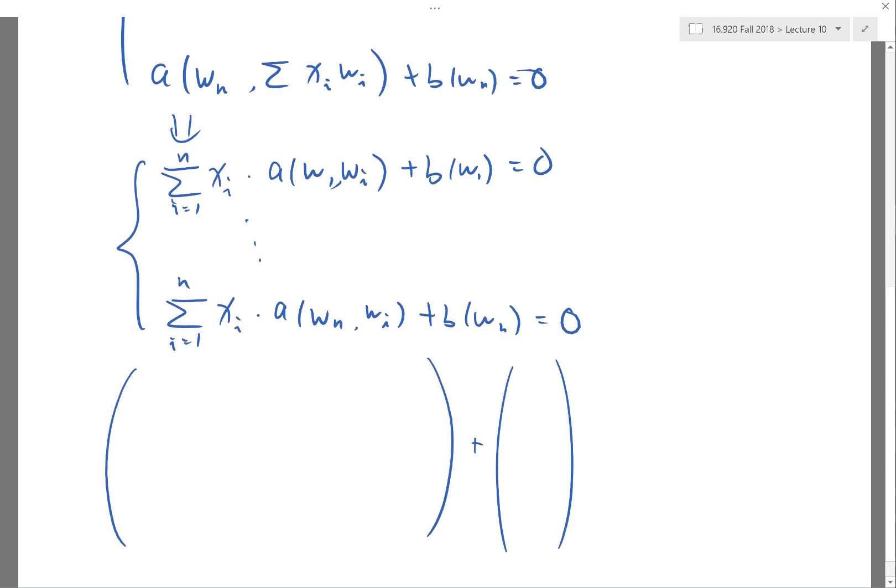This is actually a linear system. The right-hand side is B(W1), B(W2), ... B(WN), and the unknown is X1, X2, ... XN.